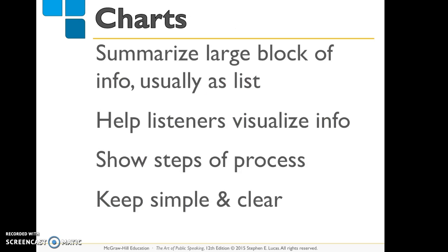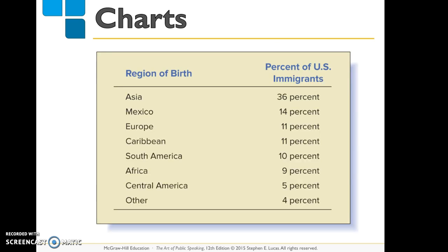Charts are a good choice when a speaker needs to summarize large blocks of information. They help listeners visualize information better, can show steps in a process, and keep complicated information simple and clear. This chart shows the percentage of US immigrants by region of birth, listed by percentage rather than alphabetically. People from Asia had the most immigration at 36 percent, while Central America was the lowest at five percent.